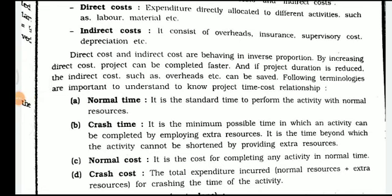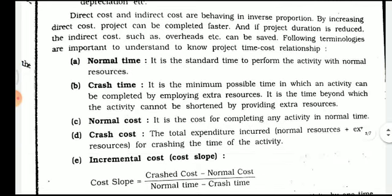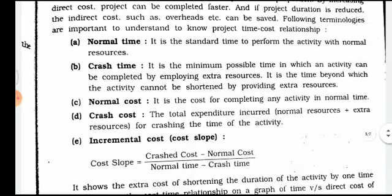By increasing direct cost, the project can be completed faster. If project duration is reduced, indirect costs such as overheads can be saved. The following terminologies are important to understand the project time-cost relationship. Normal time is the standard time to perform the activity with nominal resources. As per the normal time, the performance of the activity is due on standard time as scheduled.